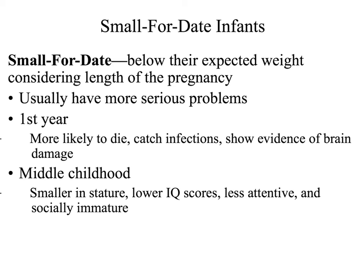Another term for underdeveloped individuals is small for date — those who are below their expected weight considering the length of pregnancy. These individuals typically have more serious problems. In the first year, small-for-date infants are more likely to die, catch infections, and suffer from brain damage. In middle childhood, those who survive are often smaller in stature with lower IQ scores, less attentive, and socially immature.